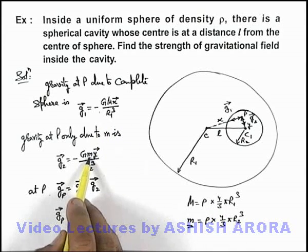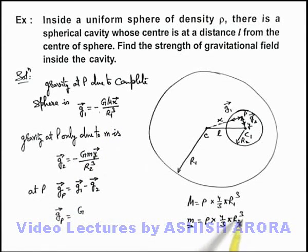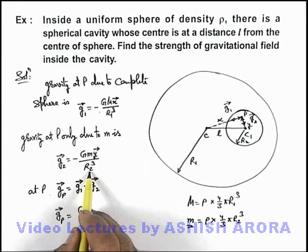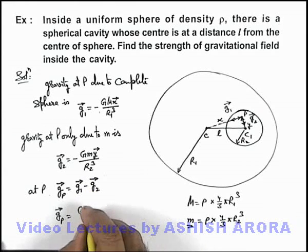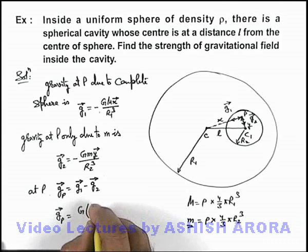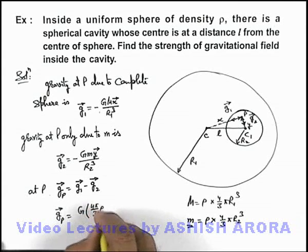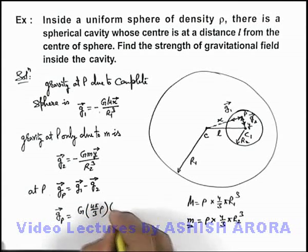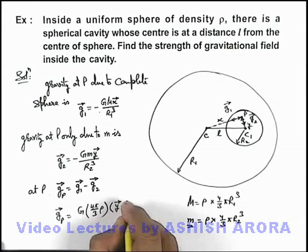Here also when we substitute m as 4/3 π r₂³ ρ, r₂³ will cancel out. So this will be G multiplied by 4π/3 ρ, and we are having parameters left are y vector minus x vector.